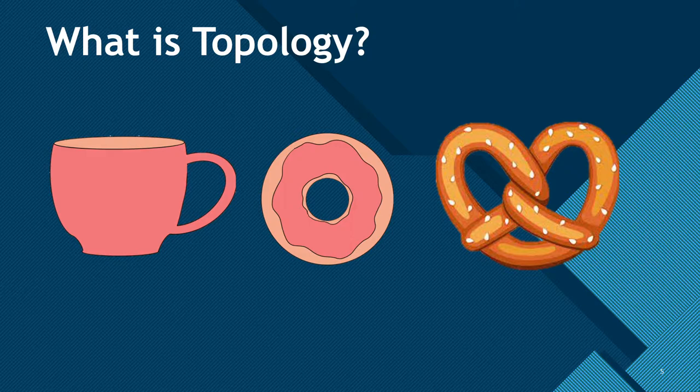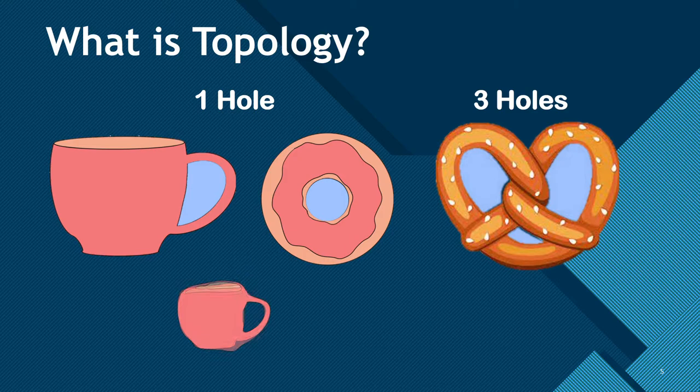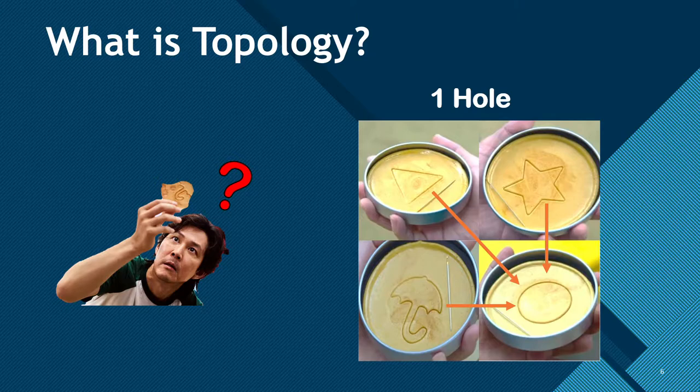With that being said, the classic example for topology is a coffee cup and a donut. Take a look at these three objects. For normal people, a donut is obviously closer to a pretzel than it is to a coffee cup, right? Well, in the eye of topologists, a donut is the same as a coffee cup since it possesses one hole, while a pretzel possesses three holes. In fact, we could say that all Dalgona candies in the Squid Game series are the same in the eye of topologists, since all of the shapes possess only one hole.